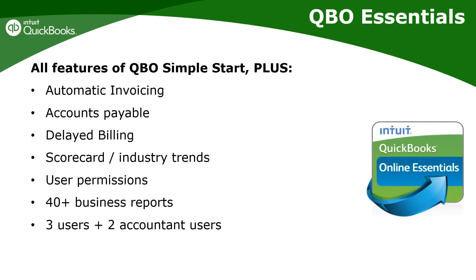The Essentials version includes everything from Simple Start, plus: automatic invoicing — like monthly membership invoices for a fitness center — accounts payable, and delayed billing. For example, a lawyer entering time throughout the month as delayed charges can invoice for all of them at month-end using Essentials. You also get a scorecard for industry trends, the ability to set user permissions for three users, and more reports including accounts payable reports.